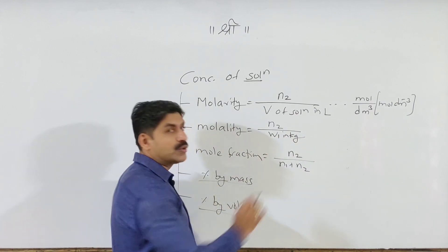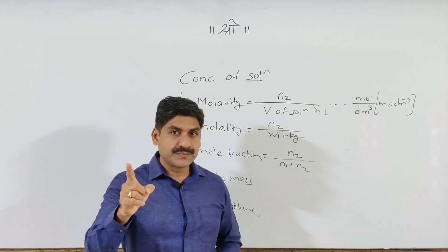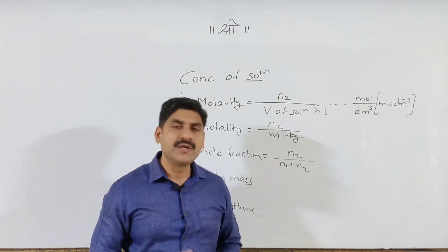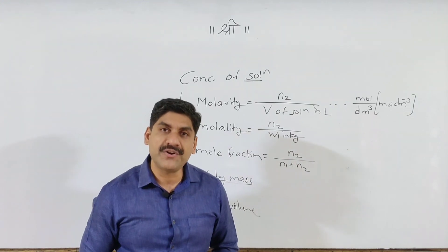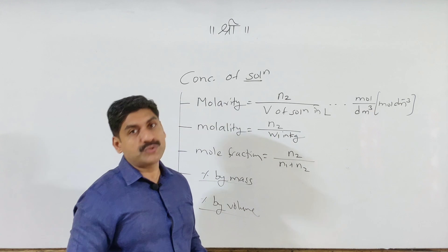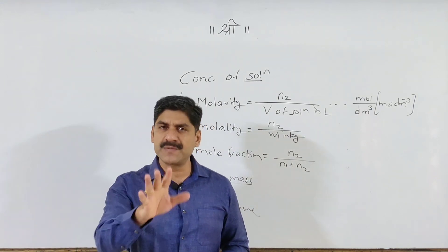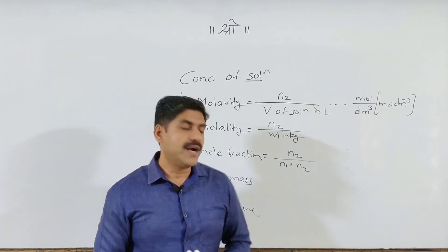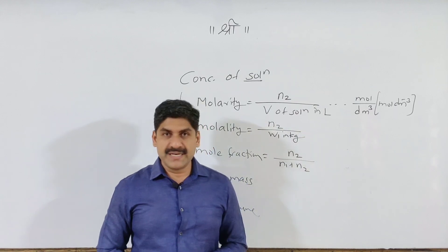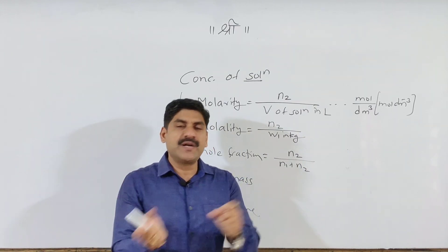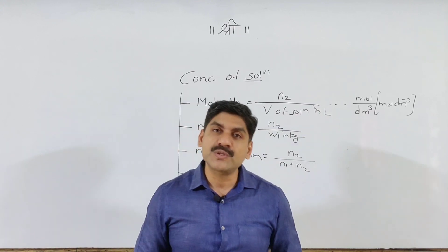Percentage by mass and percentage by volume: percentage by mass means mass of solute divided by mass of solution, multiplied by 100. Percentage by volume means volume of solute divided by volume of solution, multiplied by 100. Note that volume is not always additive — the volume of reactants and the volume of products are not always the same; volume can increase or decrease.